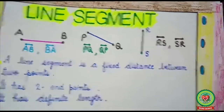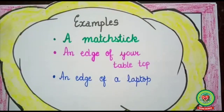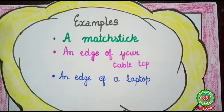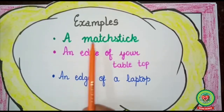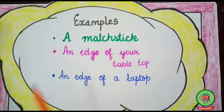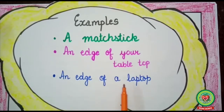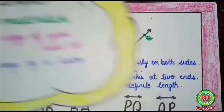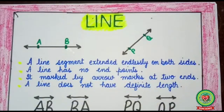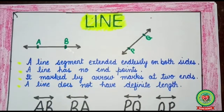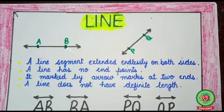Now, examples of line segment: a matchstick has a fixed length and two end points, therefore it is an example of a line segment. Similarly, an edge of your table top and the edge of a laptop are also examples of line segments.